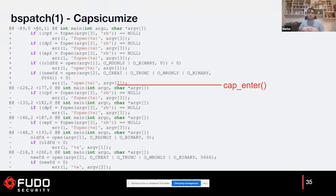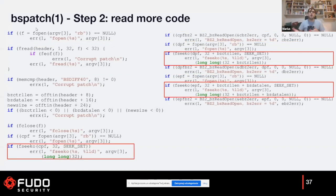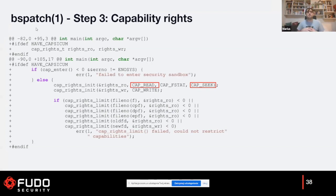We can read more code and see how our descriptors are used. For example, here we are reading data from one descriptor and seeking in another. So we can limit our descriptors even further by setting capability rights on them. In this case, we use CAP_READ and CAP_SEEK to limit the descriptors even further. This is additional work because at this point bspatch was already sandboxed and very secure, but we can go even further.